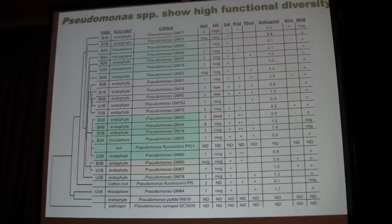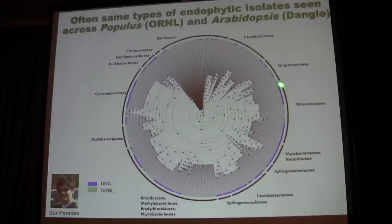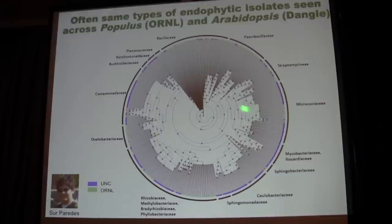Recently, we started to compare some of our isolate collection with that of the group at UNC — Jeff Dangle's lab. A colleague took a portion of our isolates and compared them with the isolates in their collection. We see a lot of the same groups, whether you're looking at Populus or Arabidopsis, as being important in our isolate collections. Sometimes there are different variants that don't overlap much between the two collections, but other times you see very similar organisms occurring in both collections on the same branch.